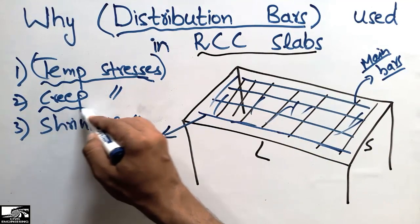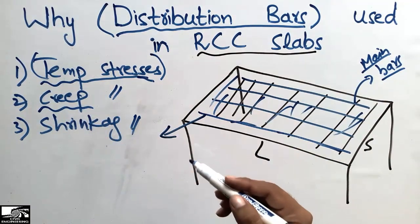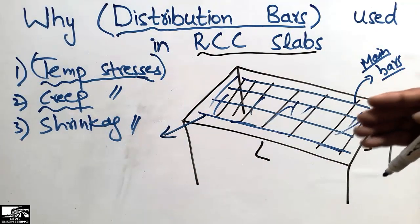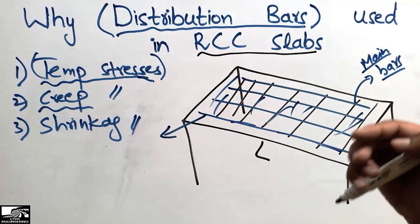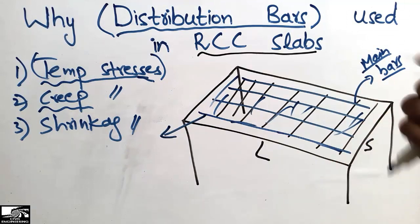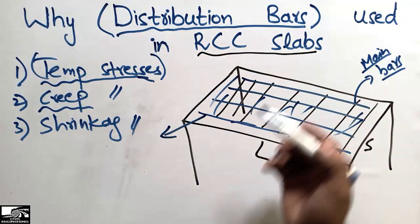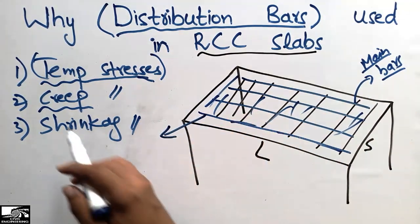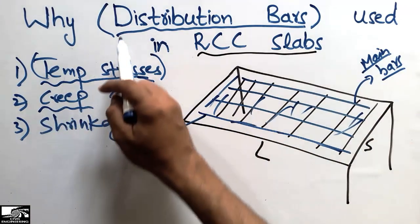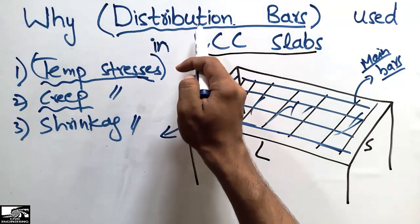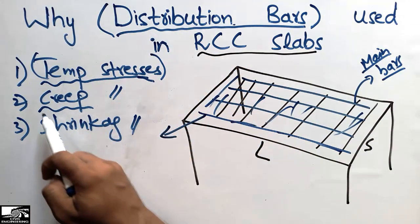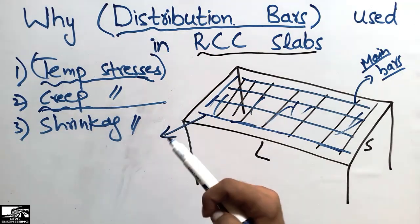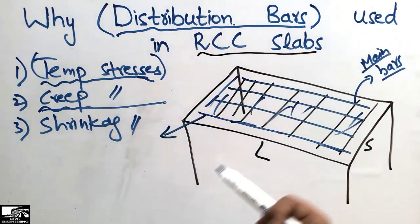Creep means that with the lifetime of the structure, it is going to produce some stresses over time. So we also place distribution bars to take the creep stresses which develop with the passage of time.